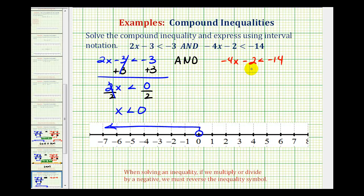For the second inequality we'll start by adding 2 to both sides. We'd have negative 4x is less than negative 12. Now we'll divide both sides by negative 4. Since we're dividing by a negative we will have to reverse the inequality symbol. Remember when solving an inequality, if we multiply or divide by a negative we must reverse the inequality symbol.